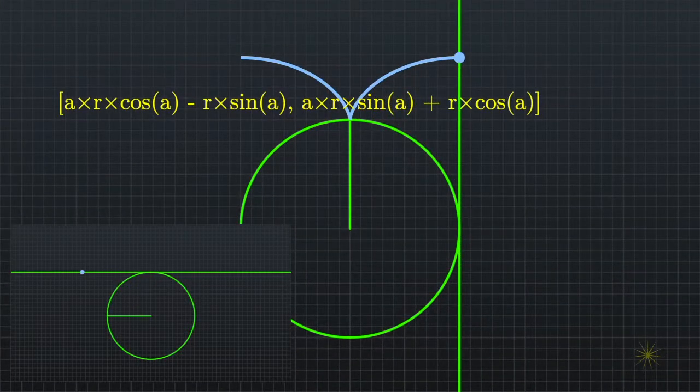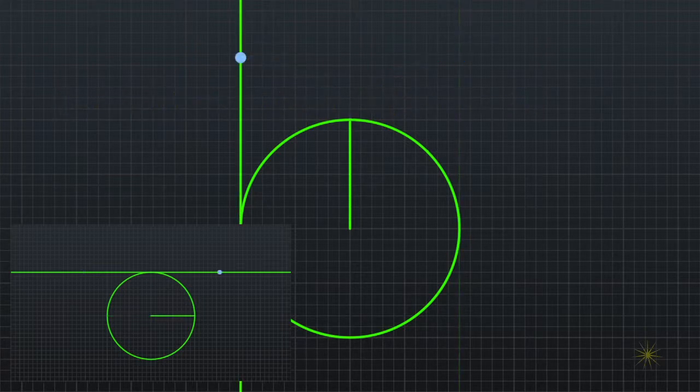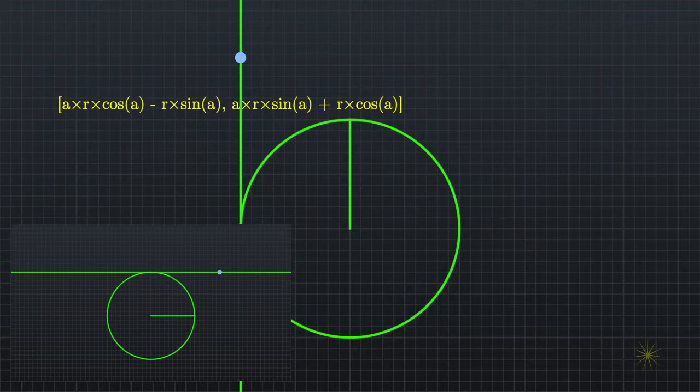Involute curves have all sorts of interesting properties, and there are plenty of articles on Wikipedia and elsewhere describing these properties. Now suppose we're interested in the path drawn not by the point on the line, but by some offset from the point on the line.